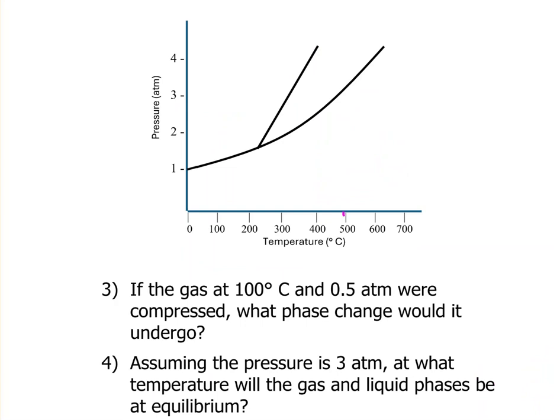This is the same phase diagram just redrawn. So we have a gas at 100°C, that's here, and 0.5 atmospheres, that's there, so right here, and we're going to compress it.